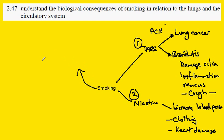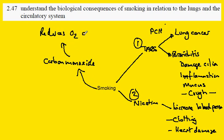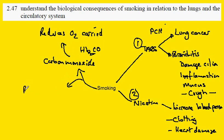The third effect is carbon monoxide. Carbon monoxide reduces the oxygen carried in the blood. When carbon monoxide joins to haemoglobin, it is very difficult to remove, and this can be lethal. The other effect of carbon monoxide is reduced oxygen to the developing fetus in a pregnant woman, which can lead to reduced birth weight, brain damage, and so forth.